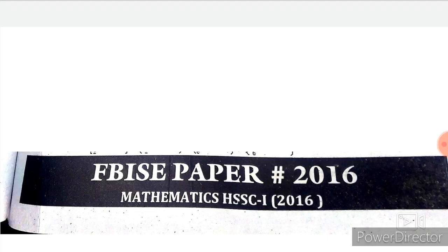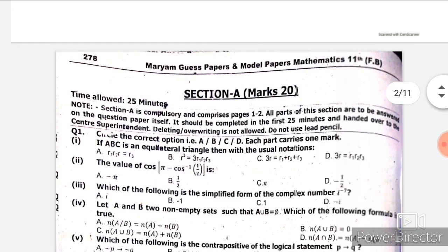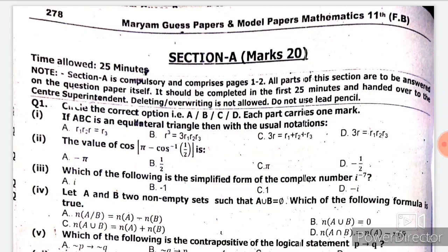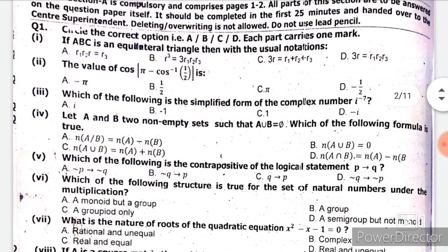Assalamu alaikum, I hope you all are doing well. Welcome to my channel. Today we will see Federal Board 2016 Mathematics First Year past paper. So let's start. First we are having Section A which is of 20 marks, each carrying one mark. Question number one is MCQs.